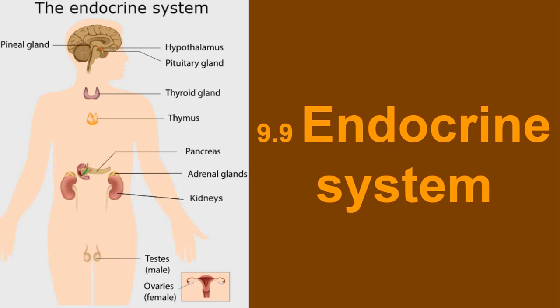This chemical coordination is called the endocrine system, which is point 9.9 in our textbook. The endocrine system has ductless glands which secrete directly into the blood. The glands include hypothalamus, pituitary gland, pineal gland, thyroid gland, and thymus gland. The thyroid gland is the largest endocrine gland.